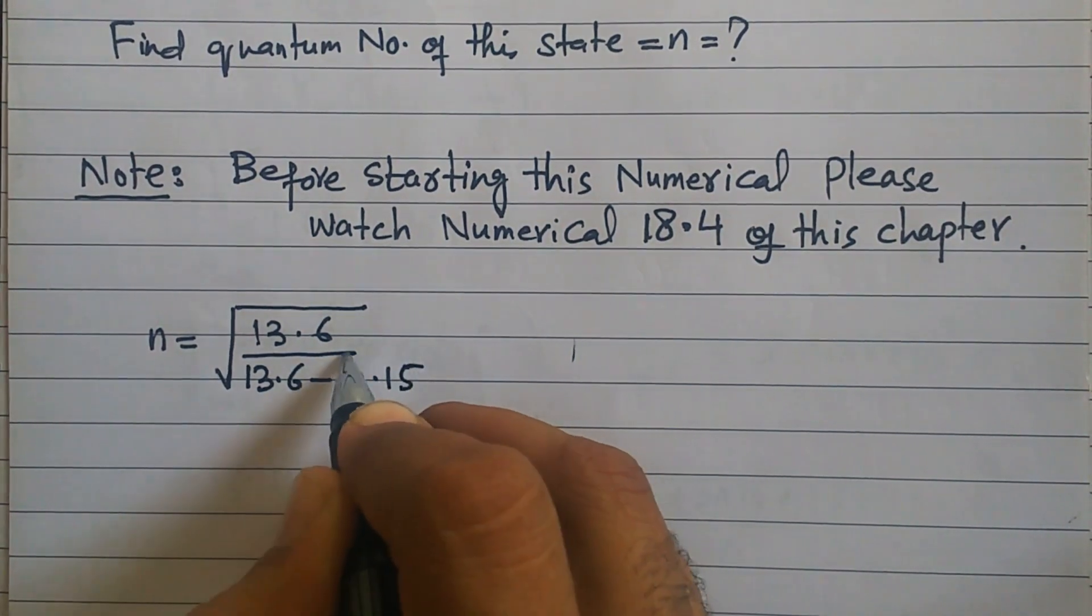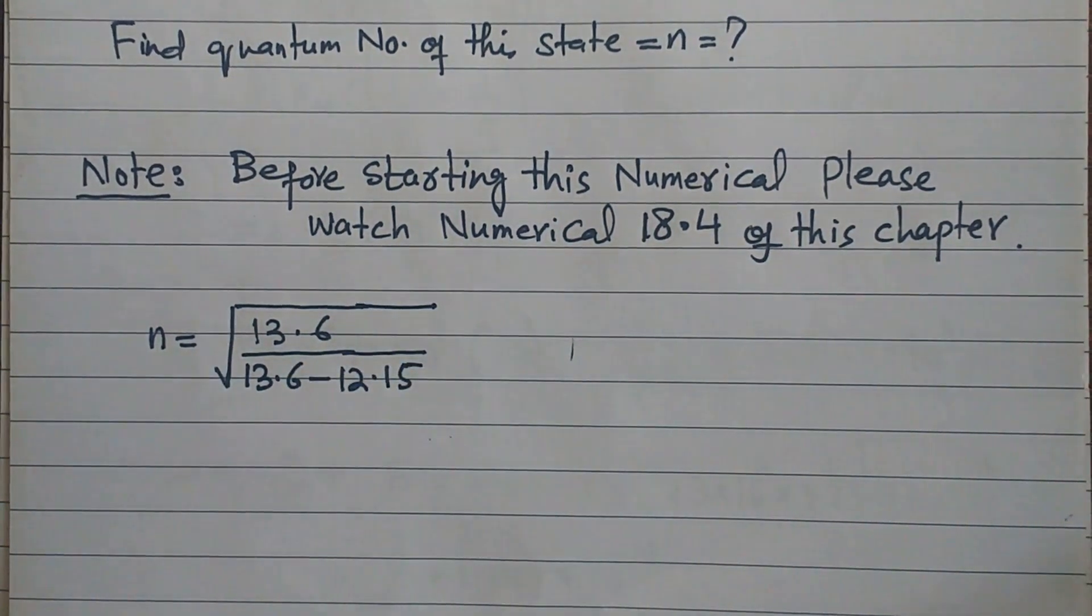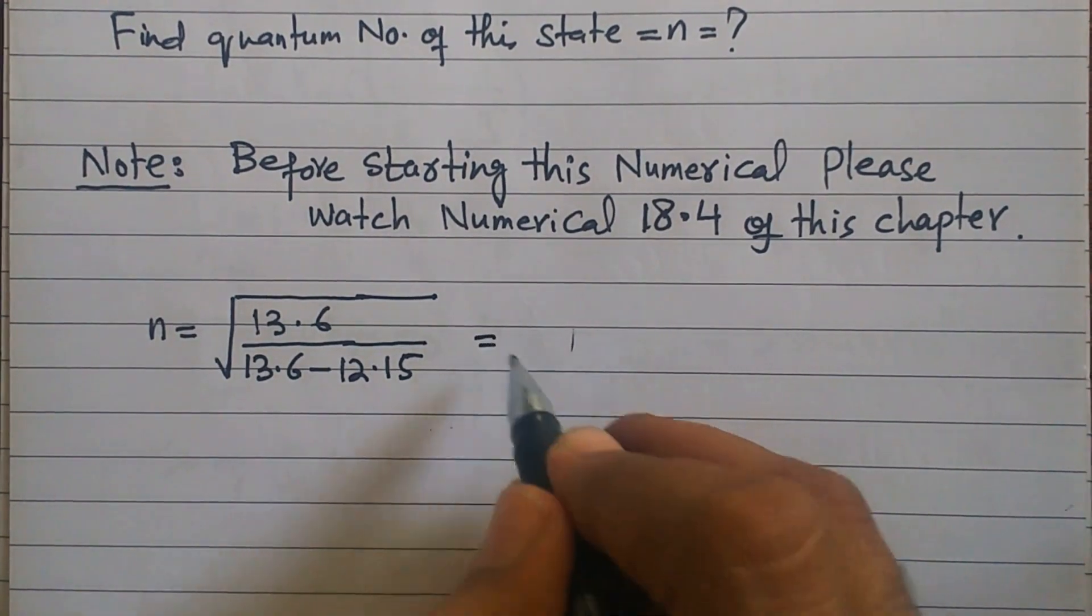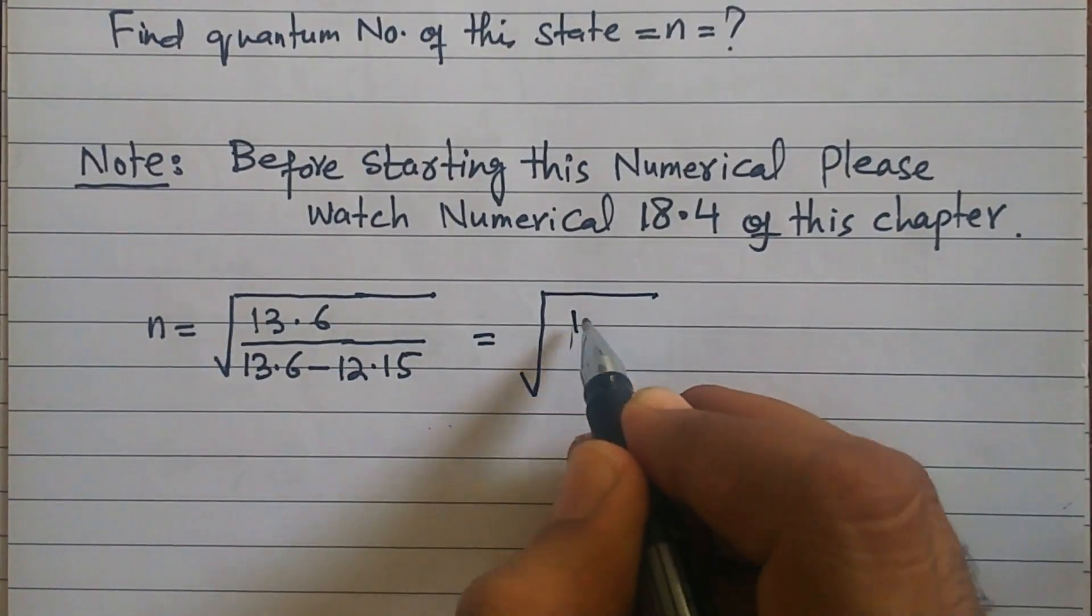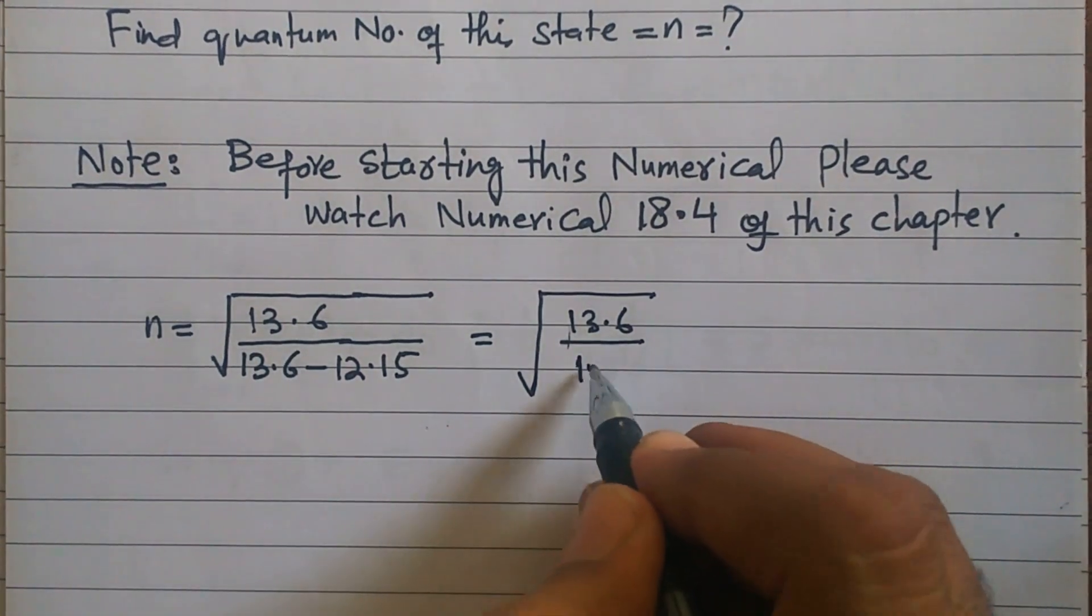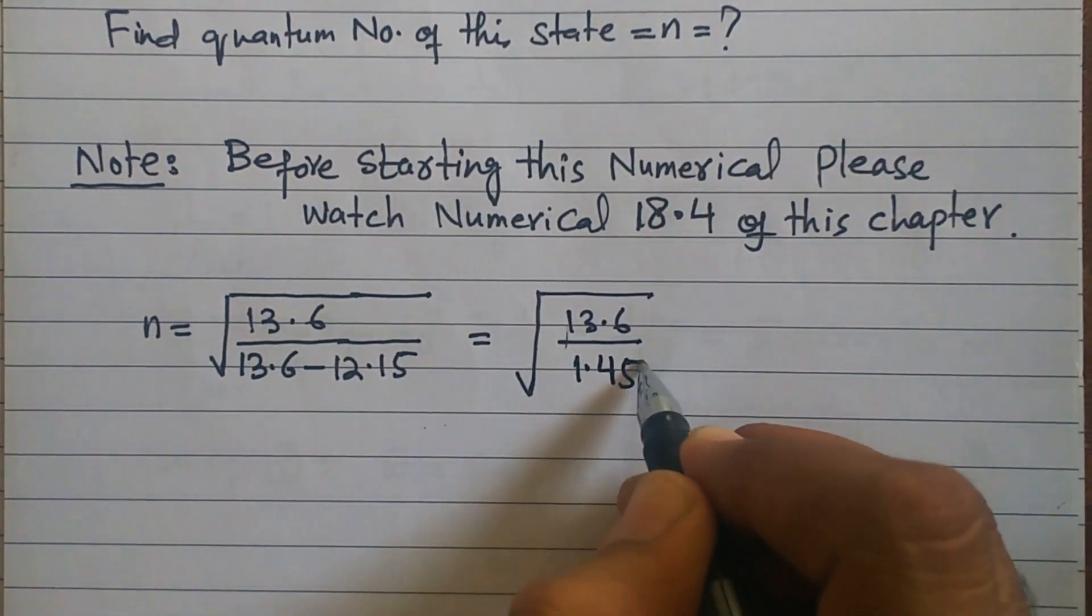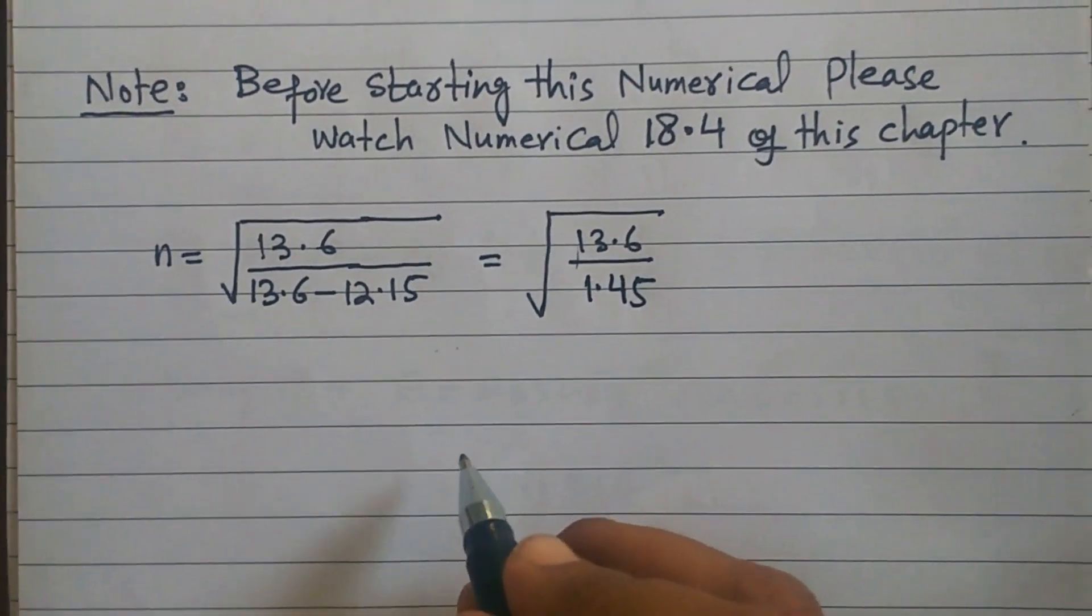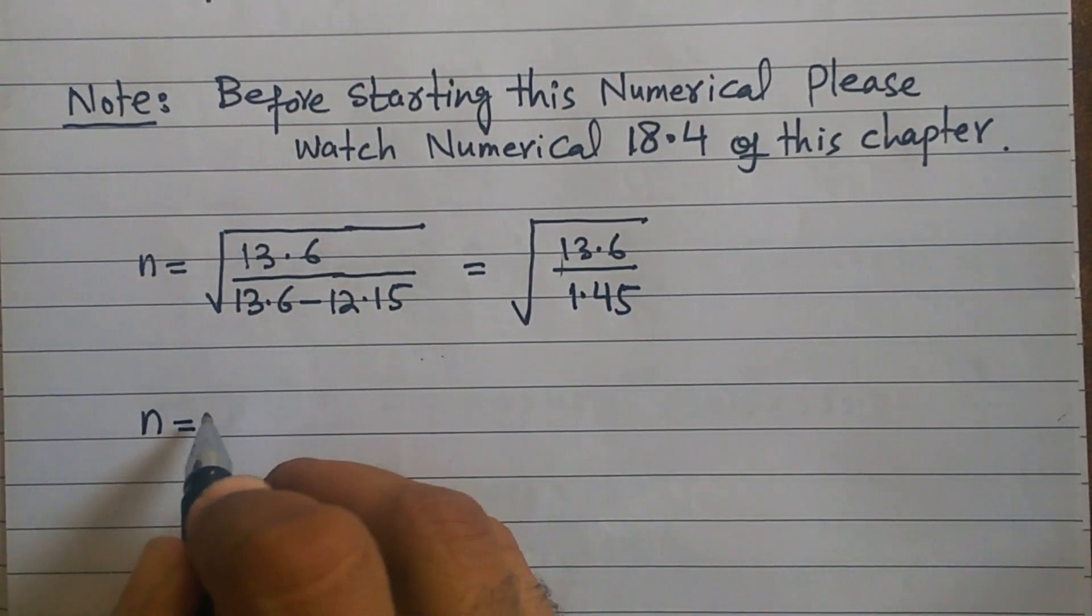The excited state which we have given. Now just solve it. Next step is under root: 13.6 upon, this minus this becomes 1.45. In both divide, when you apply the root, you have n, its value.